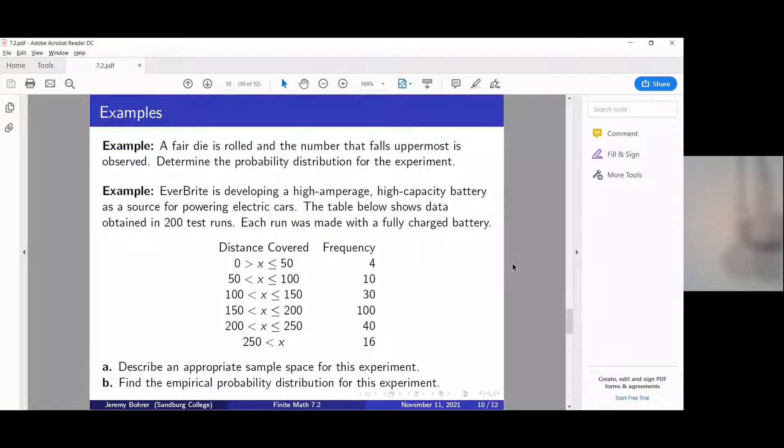In this video, we're going to look at these videos on page 10 of the 7.2 slides. This first problem: a fair die is rolled and the number that falls uppermost is observed. Determine the probability distribution for this experiment.